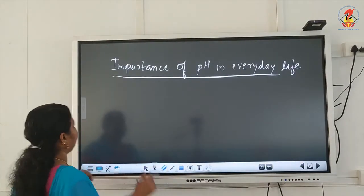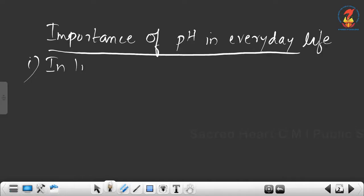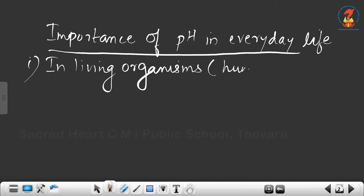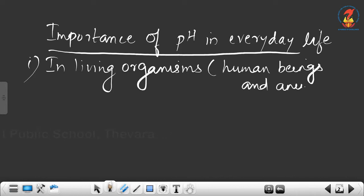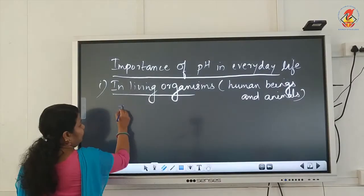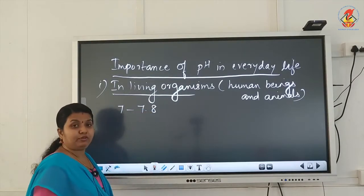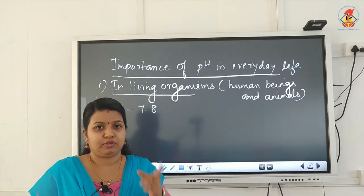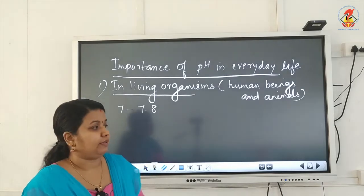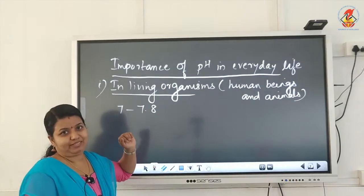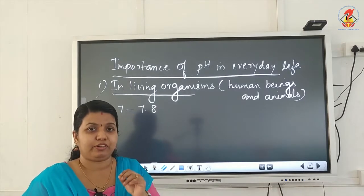The first point under importance of pH in everyday life is the importance of pH in living organisms — especially human beings and animals. Our body works within a pH range of 7 to 7.8. This is an important question. The pH range between which our body works is 7 to 7.8 — neutral to slightly basic.